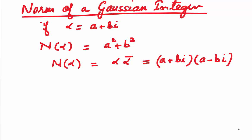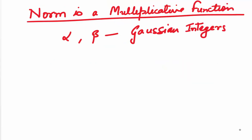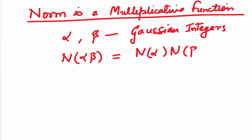In other words, N(alpha) is nothing but alpha times alpha-bar, where alpha-bar is the conjugate of alpha. So alpha equals a plus bi and alpha-bar equals a minus bi, giving us a squared plus b squared. The norm is a real number, so norms can be used to compare the sizes of Gaussian integers. Also, the norm is a multiplicative function: N(alpha·beta) equals N(alpha) times N(beta). Note that N(alpha) always equals N(alpha-bar).